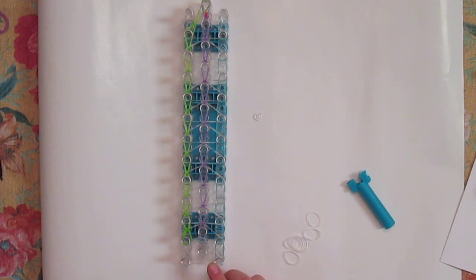And this is what your loom should look like when you're finished with the center row. Now let's get on to the teal.